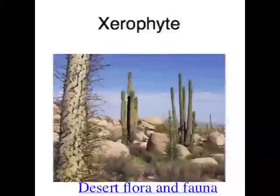Animals that live on land have adaptations too. Reptiles that live in the desert have good behavioral adaptations to regulate their body temperature. If their body temperature is cold, they'll go out into the sun to heat up. But if they get too warm in the sun, they'll go under a rock or into their burrow so their body temperature doesn't get too hot. That's a good behavioral adaptation that some desert lizards have.